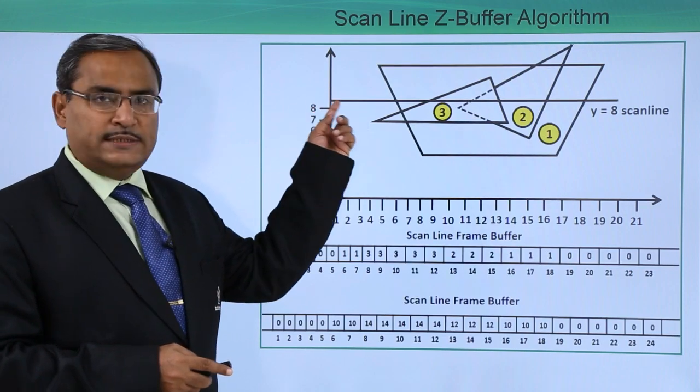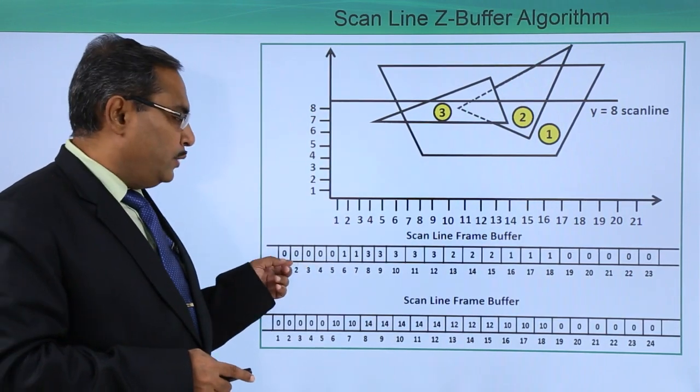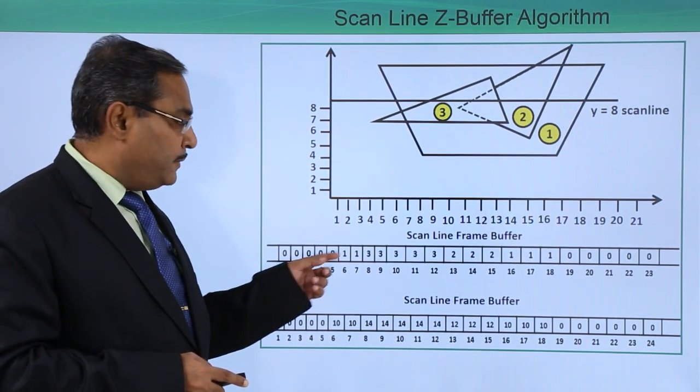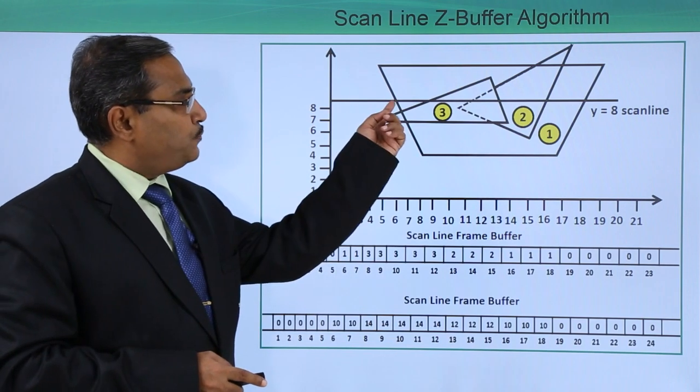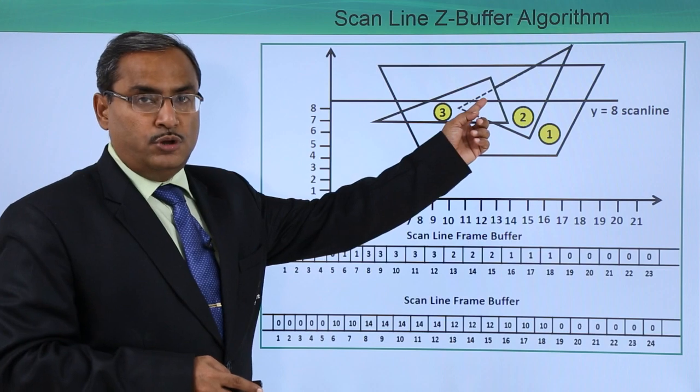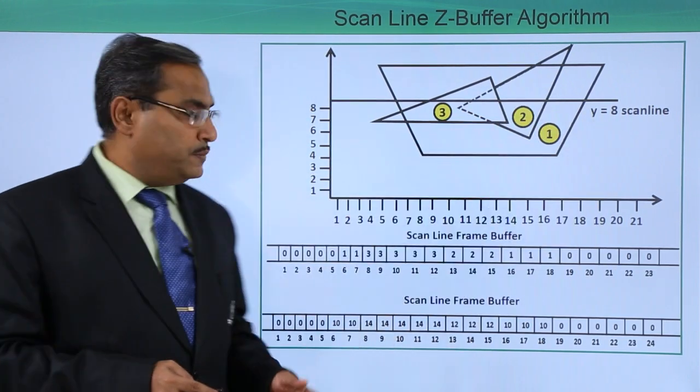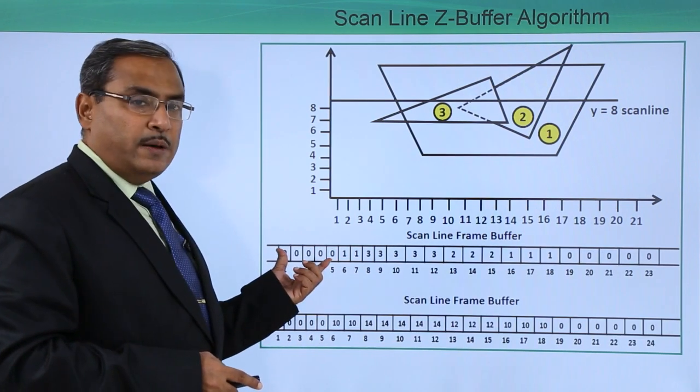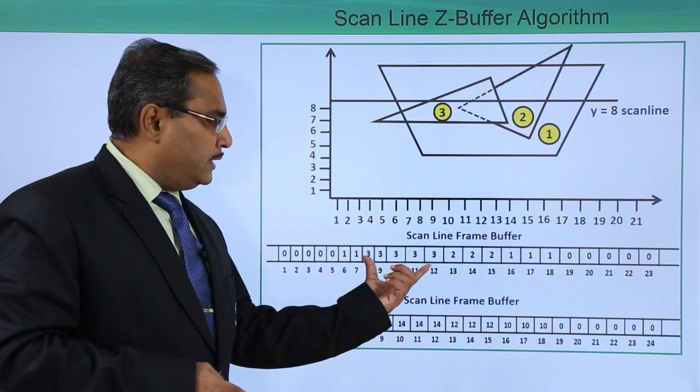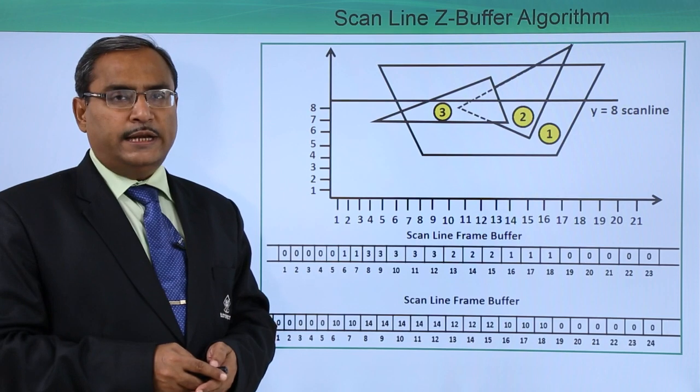If we move through this scan line, at first we get the background value, that is z min. Then we traverse through polygon number 1, then polygon 3, then 2, then 1, then with the minimum z. This shows the respective polygon sequence: 1, 3, 2, 1, and then back to minimum z.